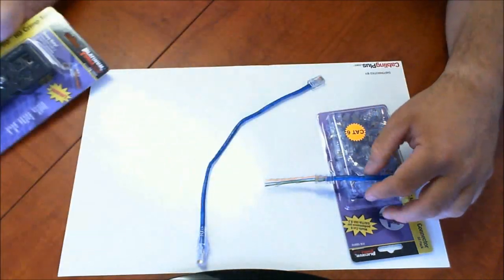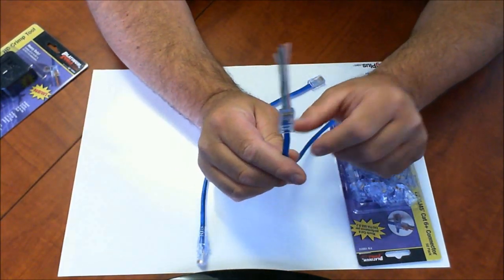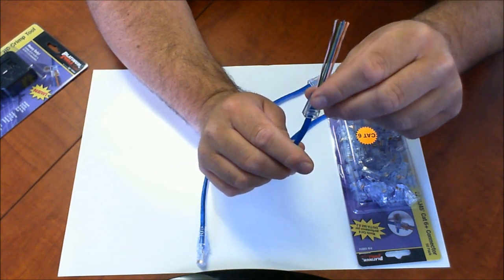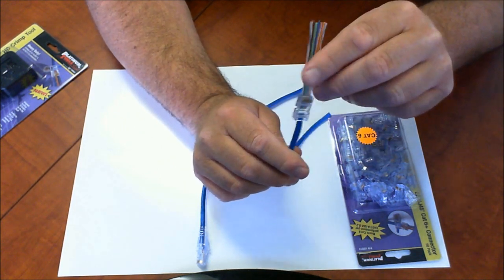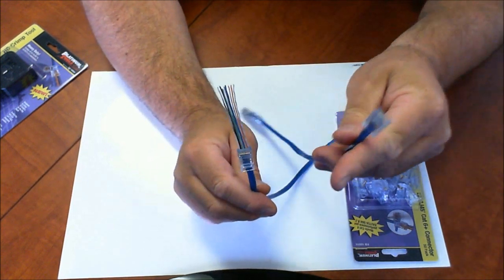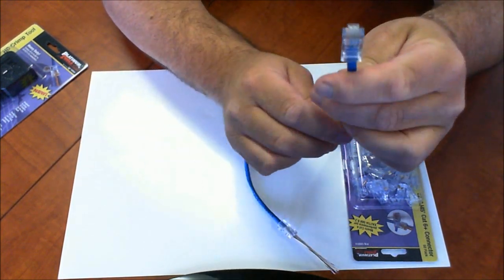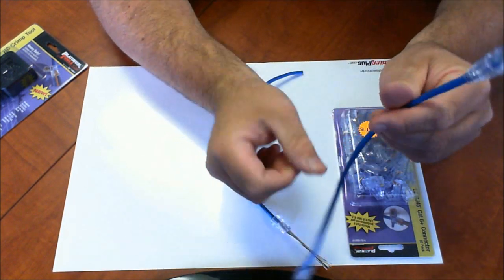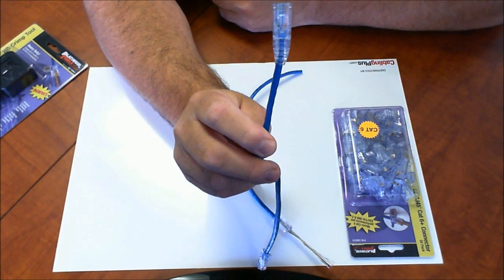Once you terminate these connectors, the tool will cut, clean, and crimp everything all at once. Here's one that's been terminated without strain relief, and this is one with the strain relief.